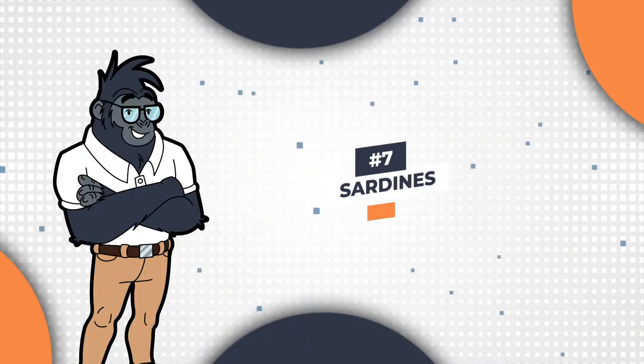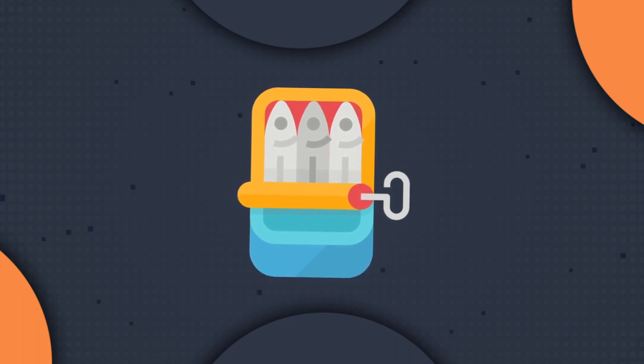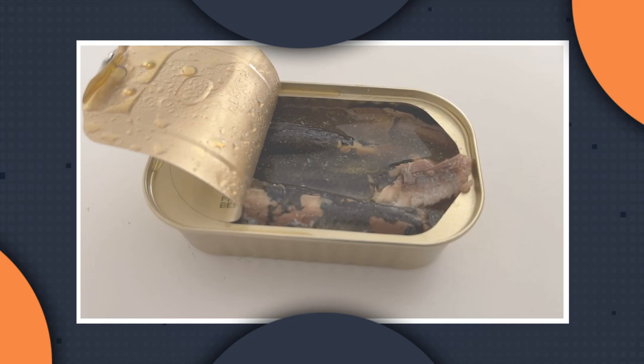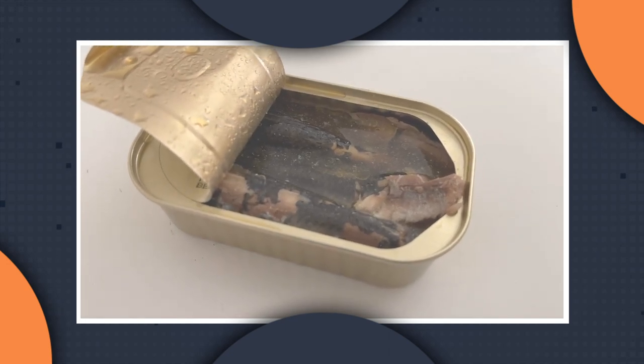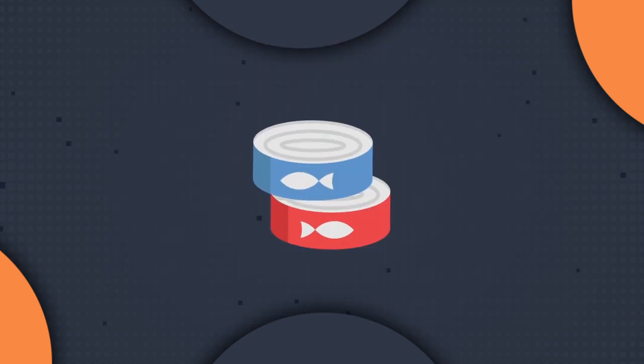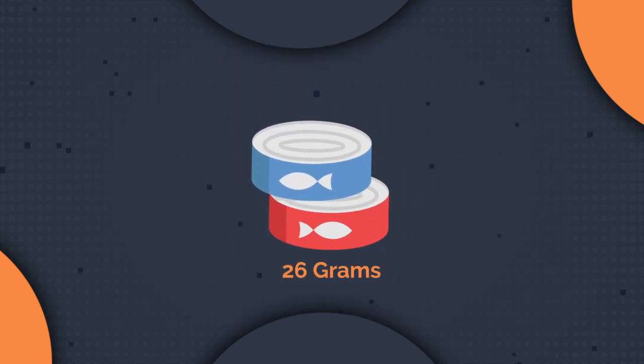Number seven, sardines. Sardines are another protein-packed option that doesn't require any meal prep. One can of sardines in water contains about 13 grams of protein and 6 grams of fat. While not as high in protein as some of the other options, two cans of sardines can give you 26 grams of protein, making it a quick and easy meal replacement.